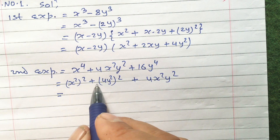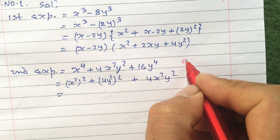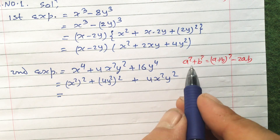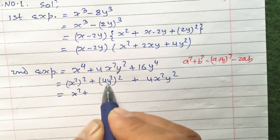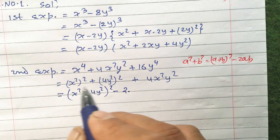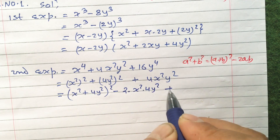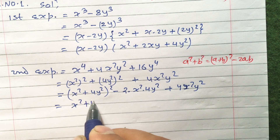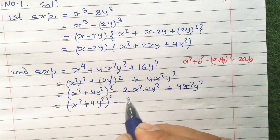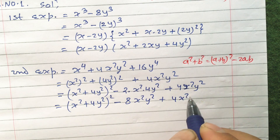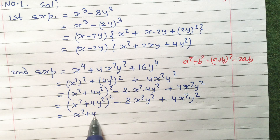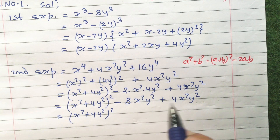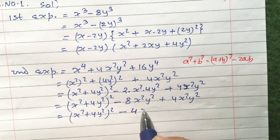We write x square whole square plus 4y square whole square plus the 4x square y square as it is. The formula is a square plus b square equals a plus b whole square minus 2ab. So a plus b whole square where a is x square and b is 4y square, whole square minus 2 times x square times 4y square, plus 4x square y square as it is. This equals x square plus 4y square whole square, and combining like terms: minus 8x square y square plus 4x square y square gives minus 4x square y square.